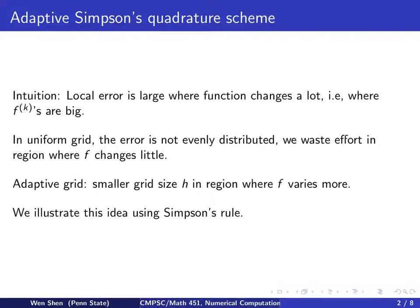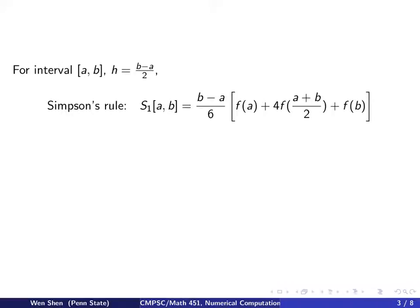Such an idea can be applied in principle to any method. To fix the idea, we will illustrate this through Simpson's rule. Consider an interval [a, b] — this is already a subinterval. The interval length h for Simpson's rule is (b minus a) over 2, because we cut it into two small pieces. The Simpson's rule on this subinterval is h/3 times the sum of f evaluated at the left, middle, and right points with coefficients 1, 4, 1.